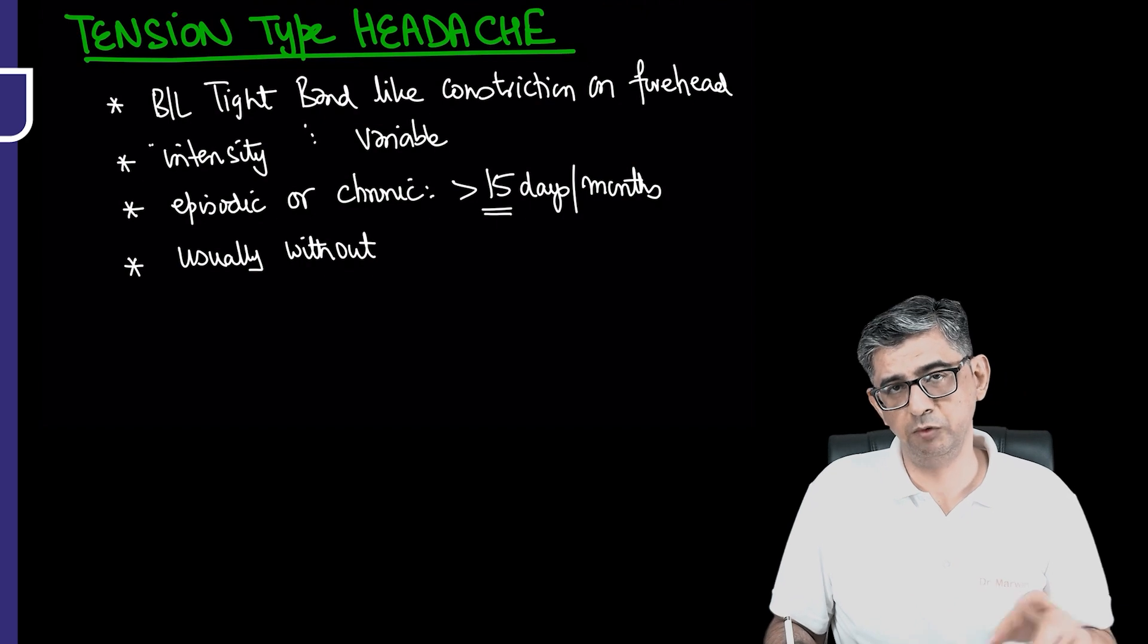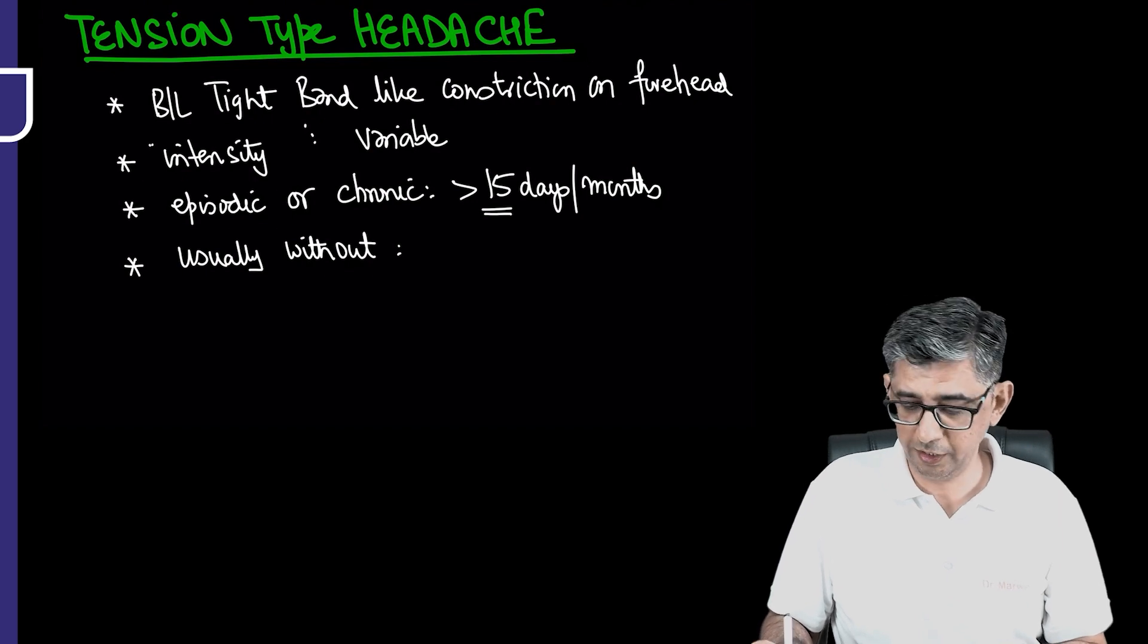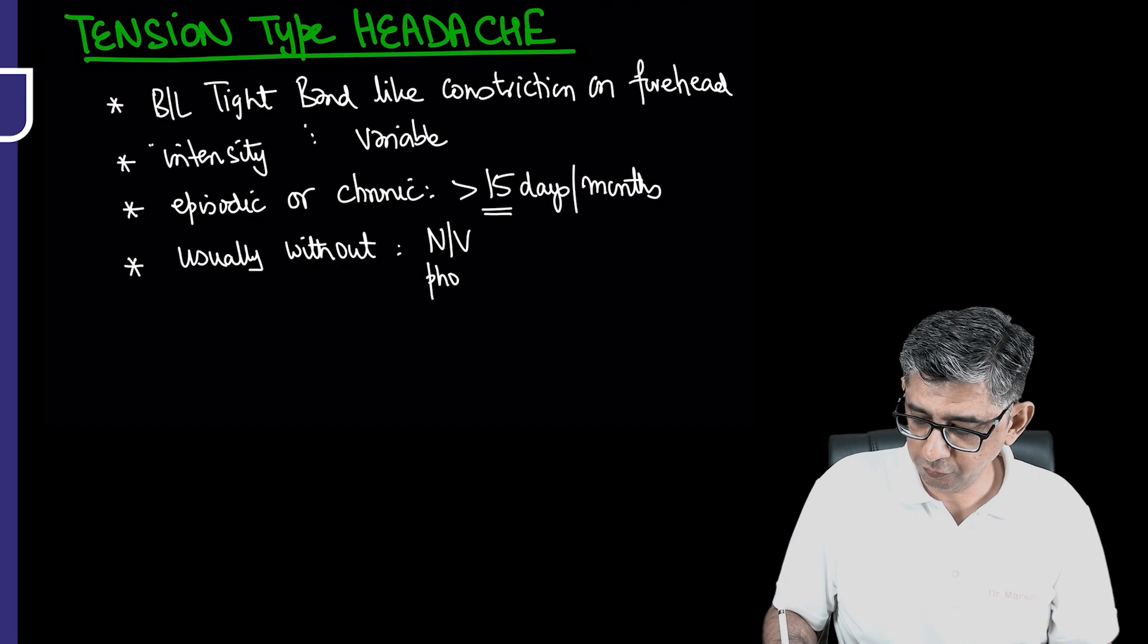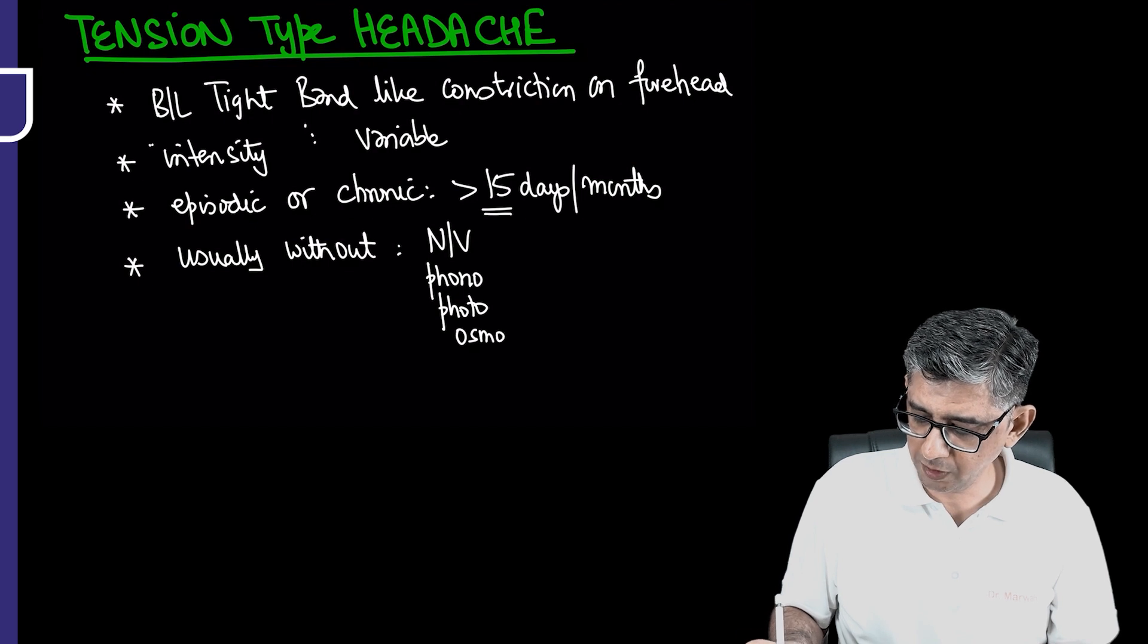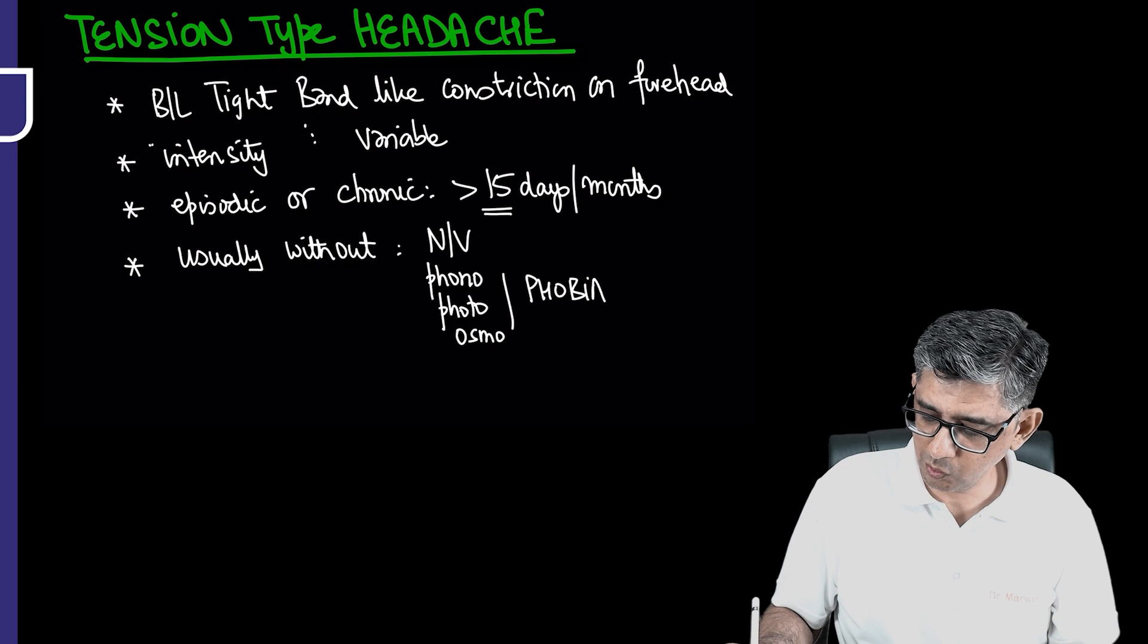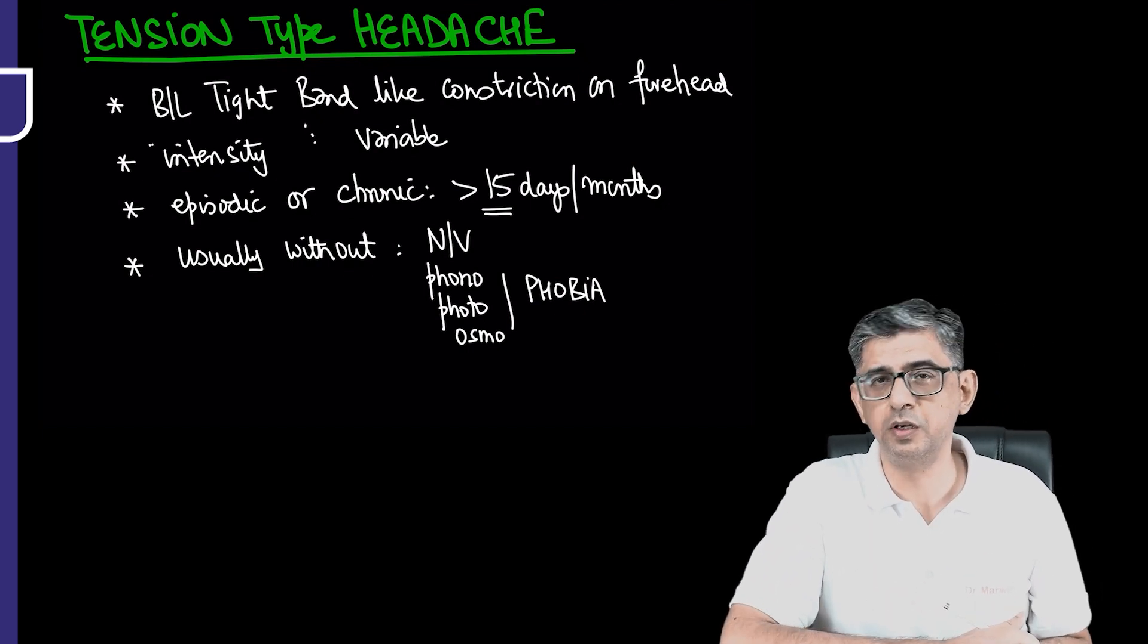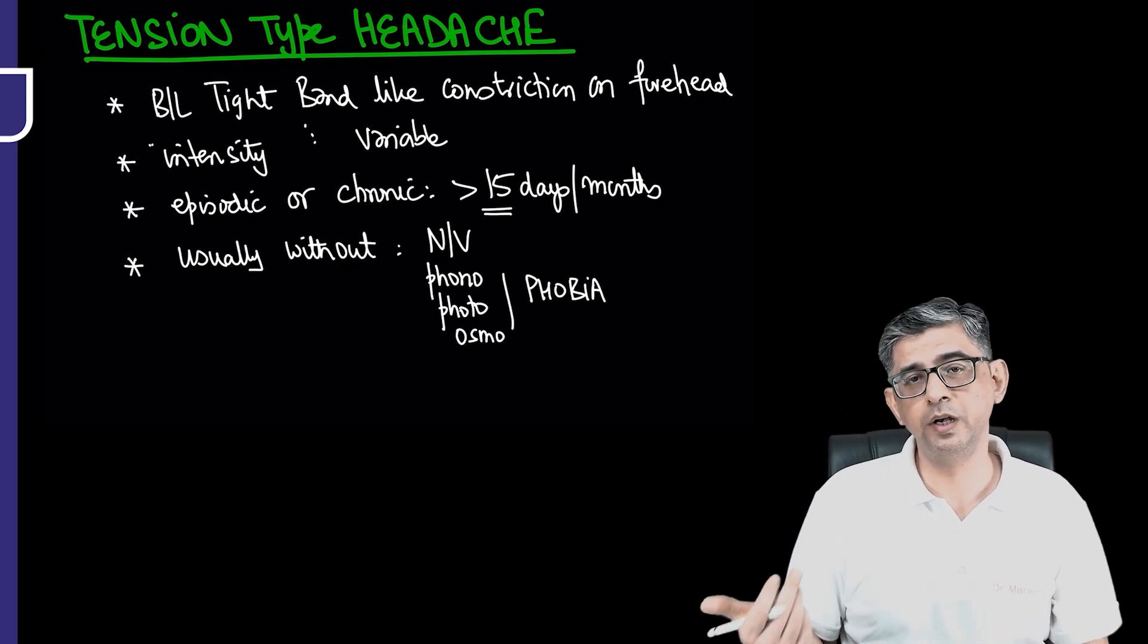Tension type headache is usually occurring without the standard features we've read about with respect to POUND. POUND was another mnemonic I mentioned for migraine. So it's going to be band-like constriction, usually without nausea or vomiting, no phonophobia, no photophobia, no osmophobia which we spoke about with respect to migraine during the headache phase. Similarly in migraine I said there could be aggravation with neck movements - that may or may not be present in these patients.